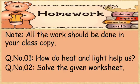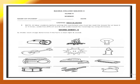Now it's time for some homework. Students, keep in mind that all the work should be done in your class copy. Question 1 is: how do heat and light help us? Question 2 is: solve the given worksheet. This is worksheet number 5 which you have to solve. In this worksheet, under each image, you have to write the form of energy — either it belongs to heat, light, or sound energy.